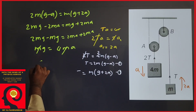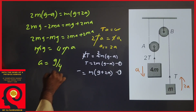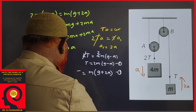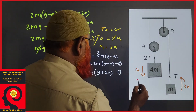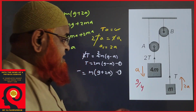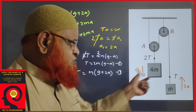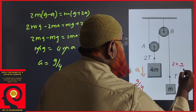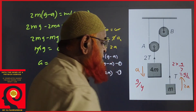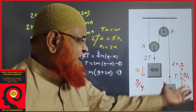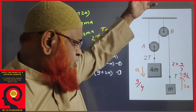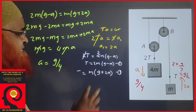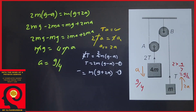Therefore, m cancels and acceleration equals g/4. So the acceleration of the larger block is g/4, and the smaller block has 2 times that, which is 2 × g/4 = g/2. The smaller mass has an acceleration of g/2 and the larger mass has an acceleration of g/4. Thank you very much.